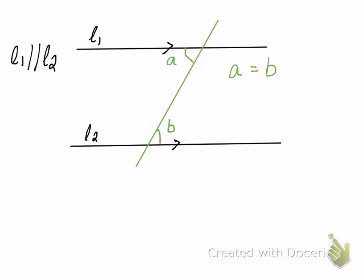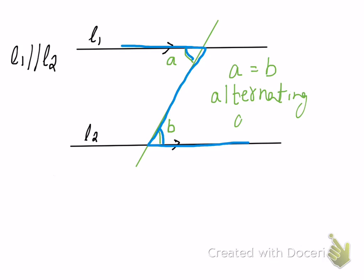There is an easy way to identify this property, and that is that you look for the Z. And here's the Z that we were looking for. This angle and this angle, they both alternate to each other and therefore they'll both be equal. The property behind this is alternating angles.